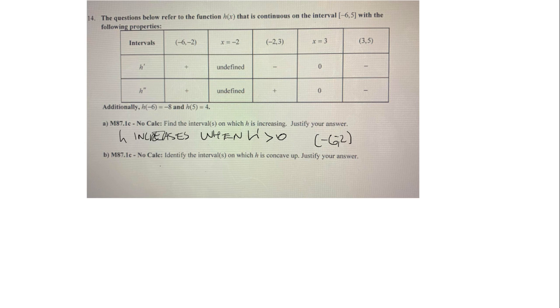In part B, we want to identify the intervals on which h is concave up. h is concave up when the second derivative is positive. So we look at the second derivative and see where it is positive. We see that between negative 6 and negative 2, it's positive, and we also see between negative 2 and 3. Everywhere else, it's either undefined, 0 or negative. So that is our final answer.